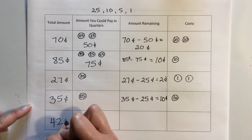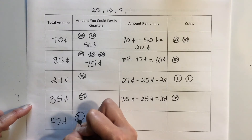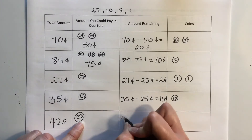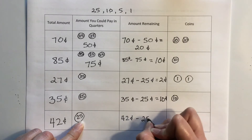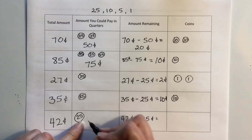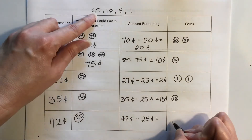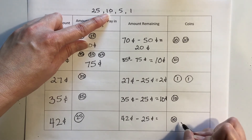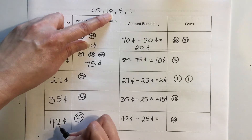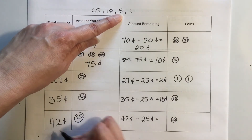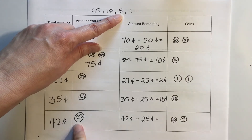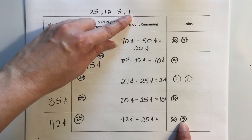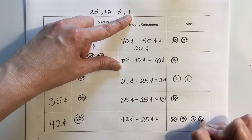What if I want to make 42 cents? I know I can start with a quarter, but a second would put me at 50 cents — too high. So 42 cents take away 25 cents. I go to dimes: 35. Another dime would put me at 45 — too high. I'll use a nickel: 35, 40. Another nickel is too high, so I go to pennies: 41, 42. We made our total.